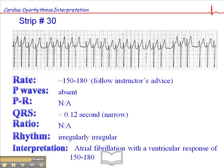The only time we cardiovert AFib is number one, if it's unstable, and two, if it's of an onset less than 48 hours — because if the patient's had AFib for longer than 48 hours, there's a high risk that there's clot formation within the atria. And if you cardiovert this patient from AFib into a sinus rhythm, those clots become dislodged and can lodge in the lungs and in the brain and cause CVAs and pulmonary emboli. And that's certainly not good for the patient and looks bad on your resume.